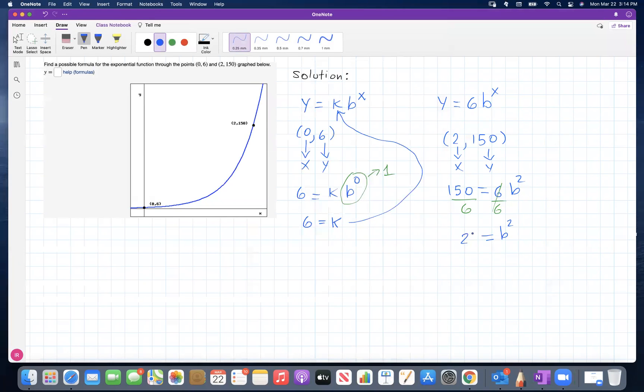So now, I want b by itself. The next step should be to take the square root of both sides. I know b is positive, so I don't have to consider a plus or minus here - b is a positive number, the base of the exponential function. So the square root of 25 gives us b equals 5.